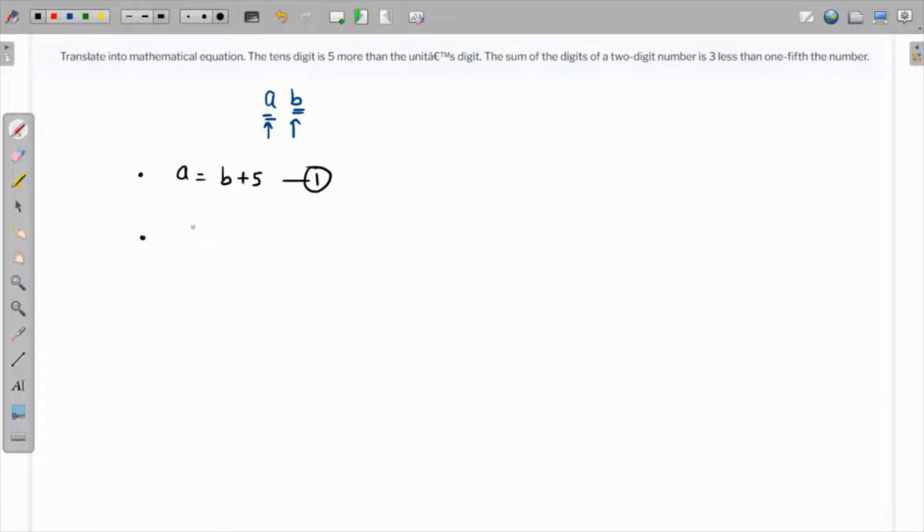of the two-digit number is a + b, and this is three less than one-fifth the number. So one-fifth of that number N, and three less than that is one-fifth of N minus 3.